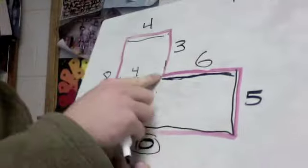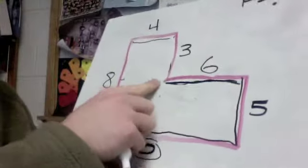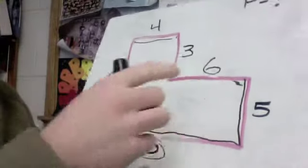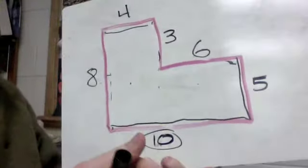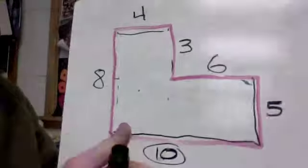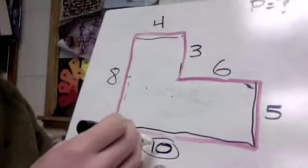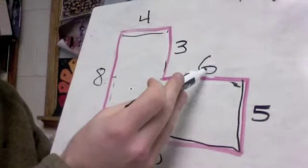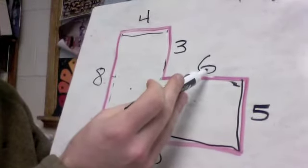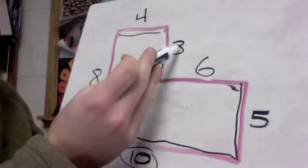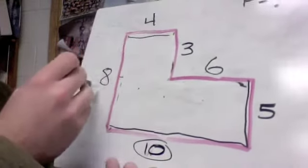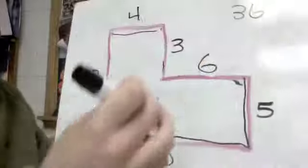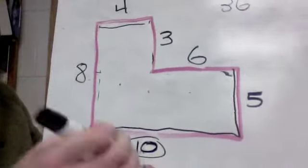Now we've got every single thing we need. We just have to add up the perimeter. 10 and 5 would be 15, and then 6 would be 21, 24, 28, and 28 plus 8 is going to be 36. So this shape has a perimeter of 36.